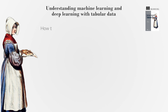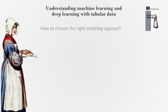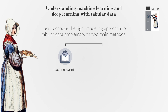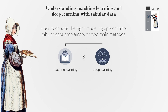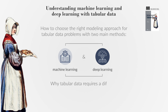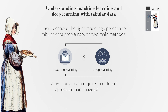This book shows you how to choose the right modeling approach for tabular data problems, introducing two main methods: machine learning and deep learning. We also discuss why tabular data requires a different approach than other data types, such as images and text.